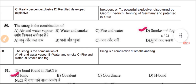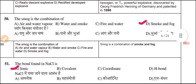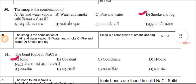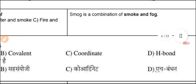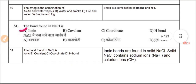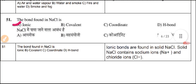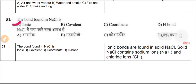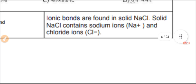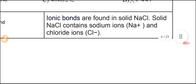Question 50: Smog is a combination of smoke and fog. Question 51: The bond found in NaCl (sodium chloride) is an ionic bond. Sodium chloride (NaCl) consists of sodium ions (Na⁺) and chloride ions (Cl⁻).